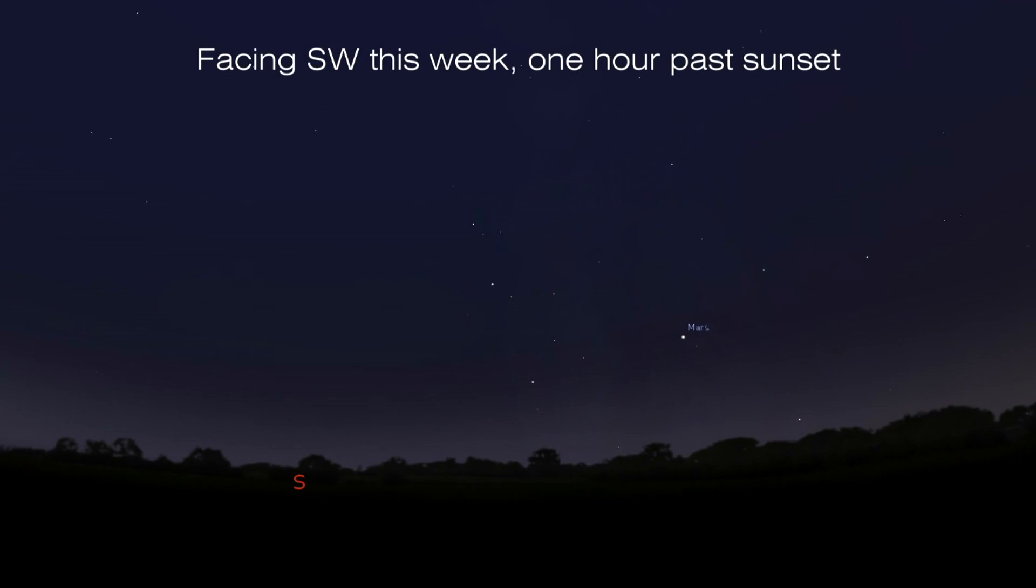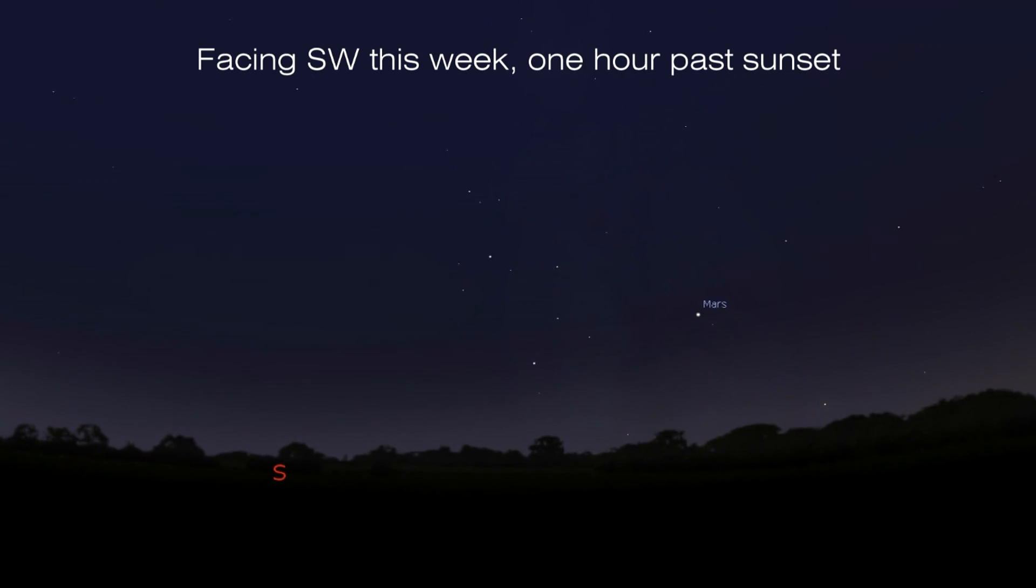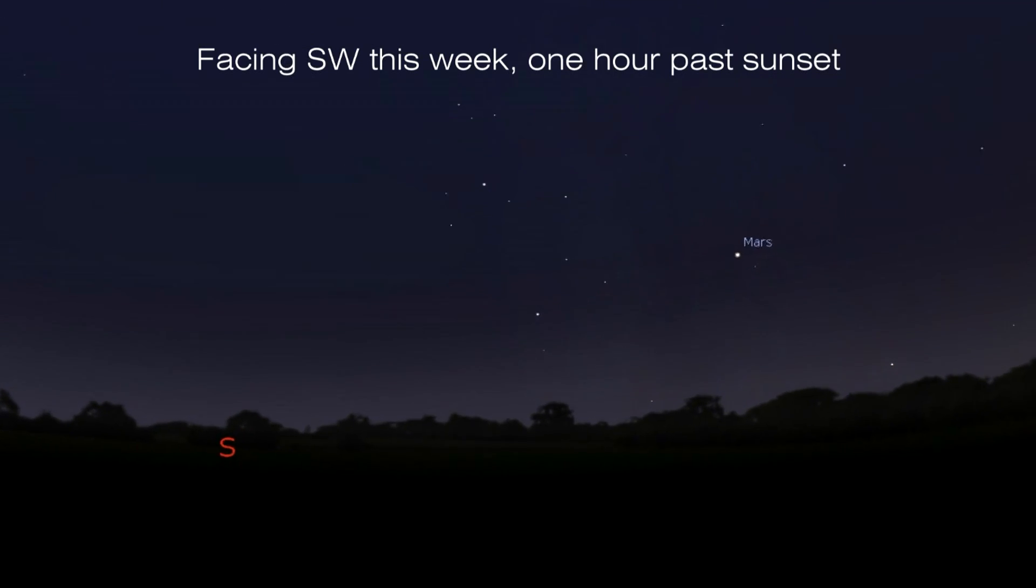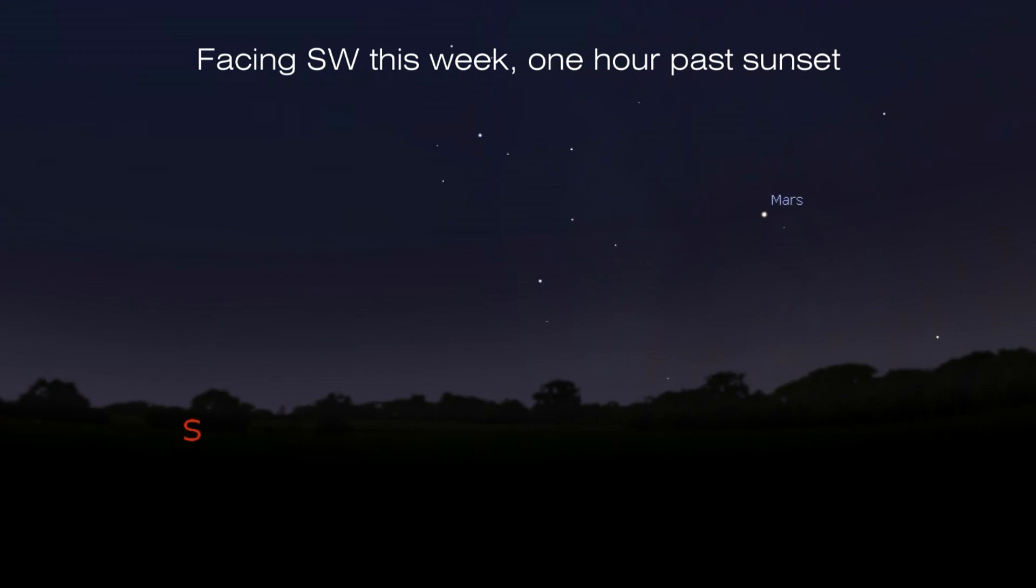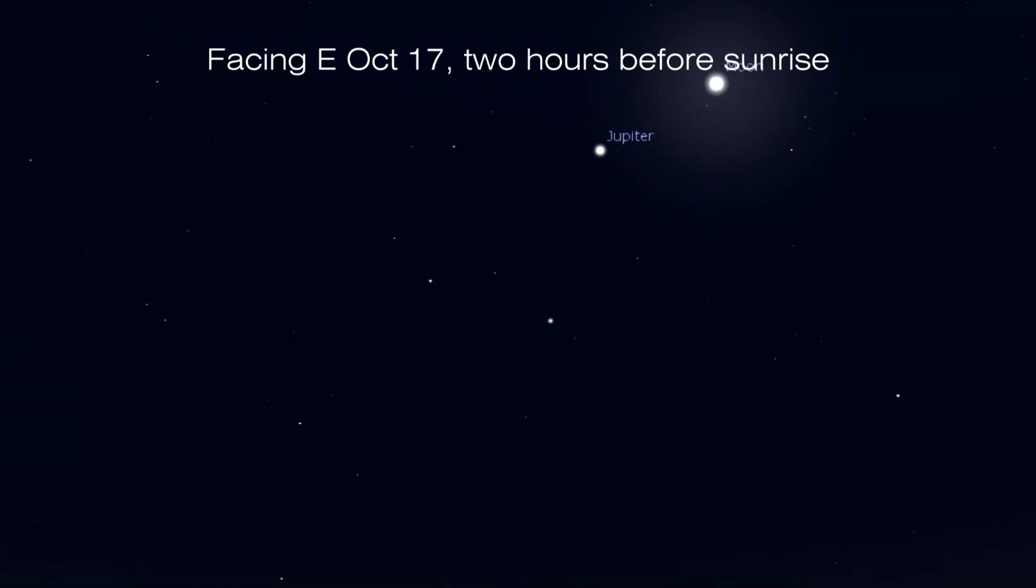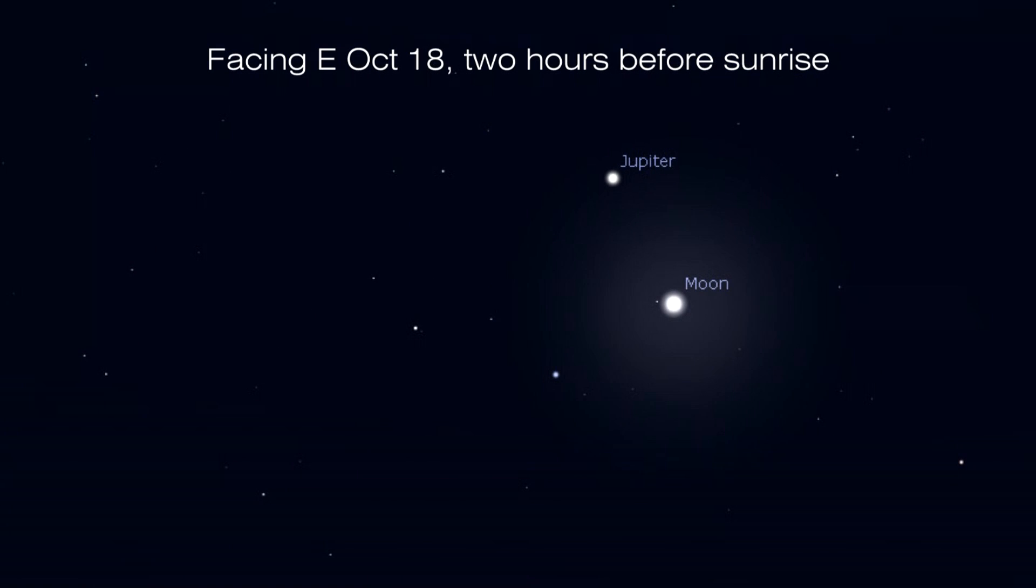Mars is the lone naked eye planet left in the evening sky, though at six arc seconds of diameter, it won't be much to look at without a larger telescope at 300 times magnification or higher. Over in the morning sky, the king of the planets sits just west of Leo the Lion, and the moon joins Jove on the morning of October 17th and October 18th.